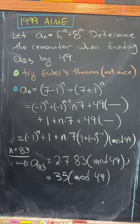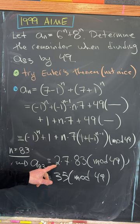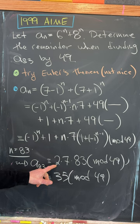But then putting those two things together and plugging in n=83, you'll see that this first term cancels, and we're left with 2×7×83 mod 49, but that can be easily calculated to be 35 mod 49.